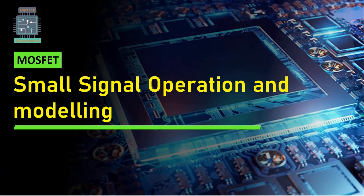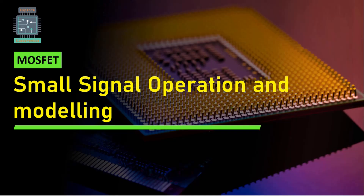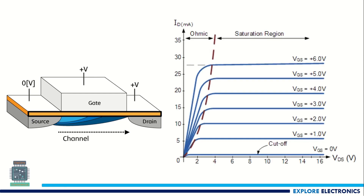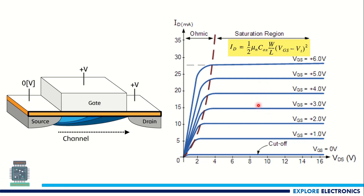Hello everyone, welcome back to Explore Electronics. In this video, let's look at MOSFET small signal operation and modeling. In a previous video, I explained the different methods of biasing when using a MOSFET as an amplifier. The basic idea is that we need to keep the MOSFET in the saturation region, so we need to fix VDS and VGS to get a constant ID. Since ID is constant in saturation, it depends on VGS, so we need to keep VGS constant to establish the operating point.